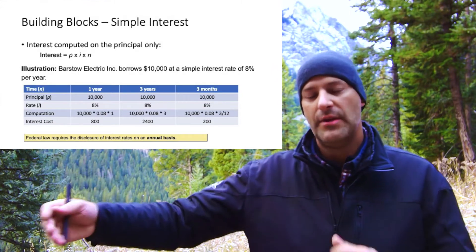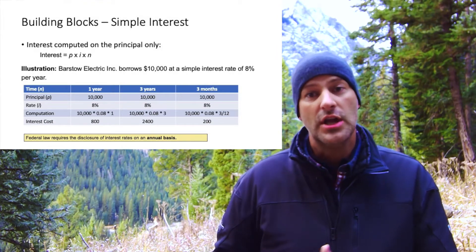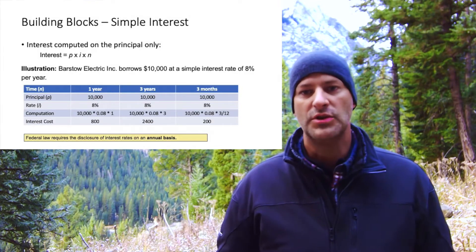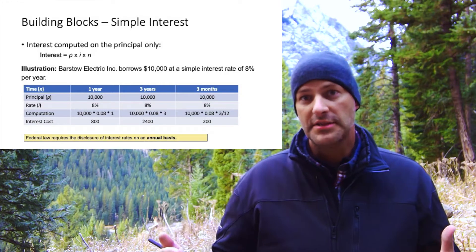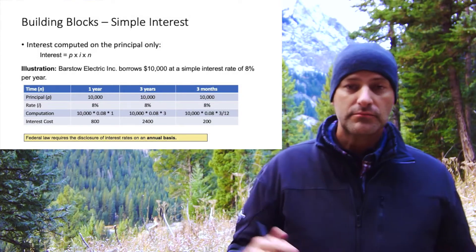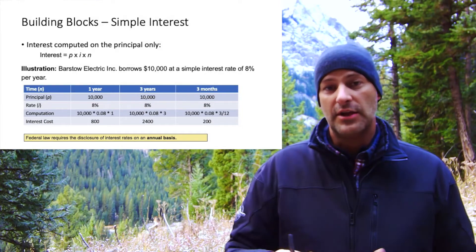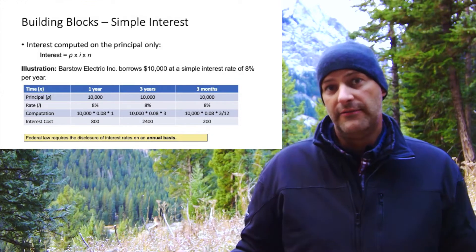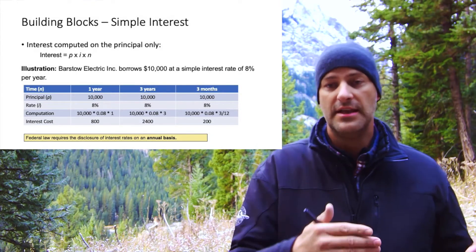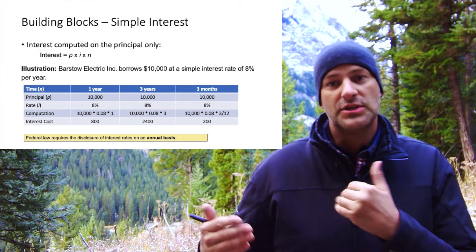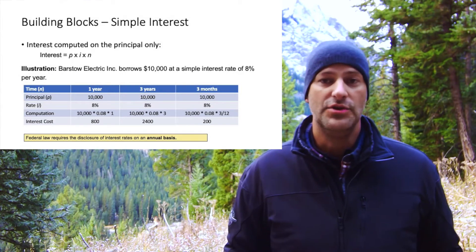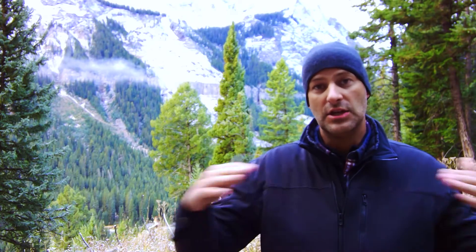What if they went shorter — say just three months, which is three-twelfths of the year? Since the 8% rate is annual, we calculate it as $10,000 × 0.08 × (3/12) = $200, which is a quarter of the $800 they'd pay for the whole year. By federal law, banks are required to disclose interest rates on an annual basis, so everything is on an annual basis unless explicitly stated otherwise.